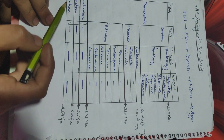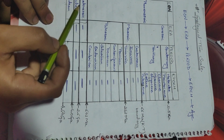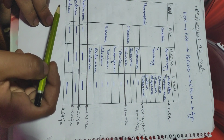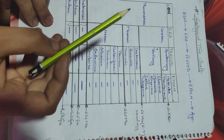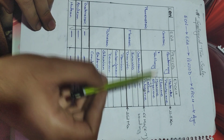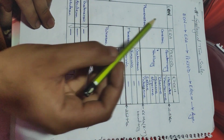We can learn the Eon divisions easily as Hadean, Archean, Proterozoic, and Phanerozoic. The main difficulties are in learning the divisions of Era, Period, and Epochs.